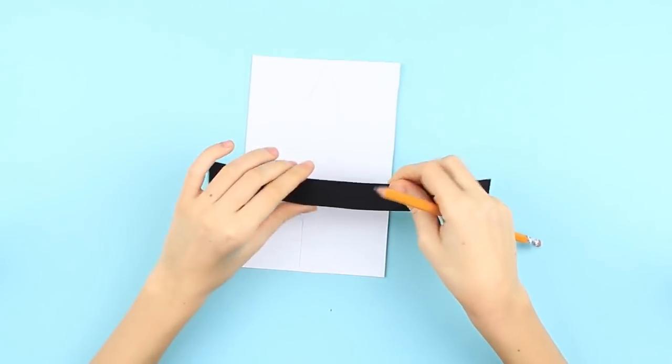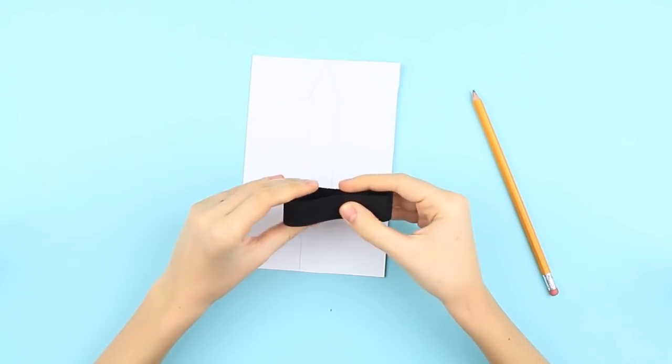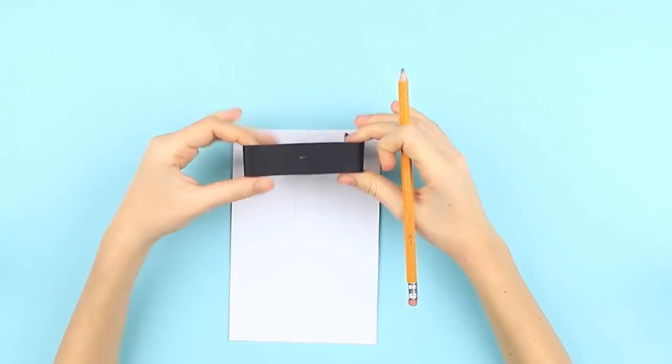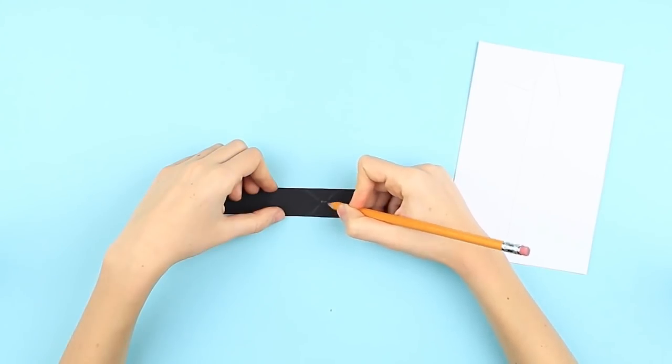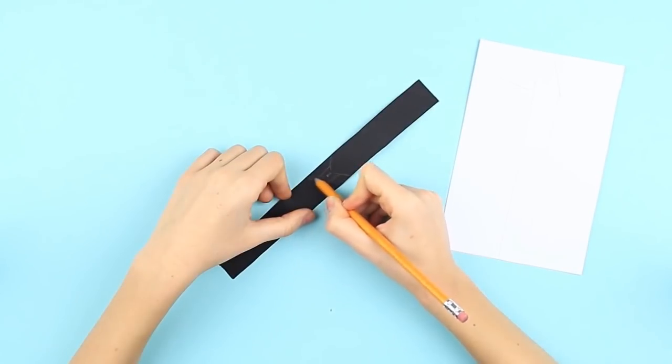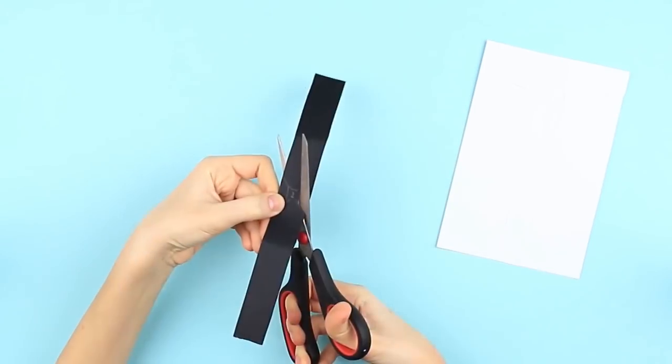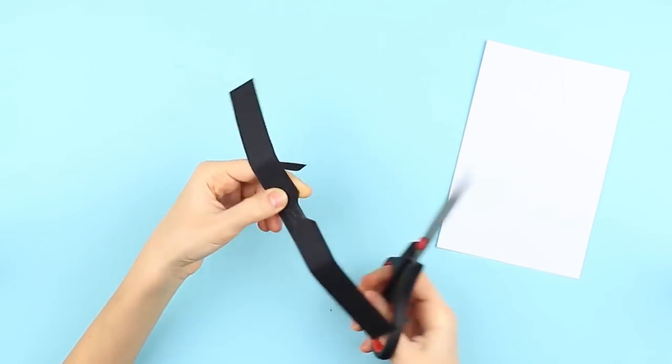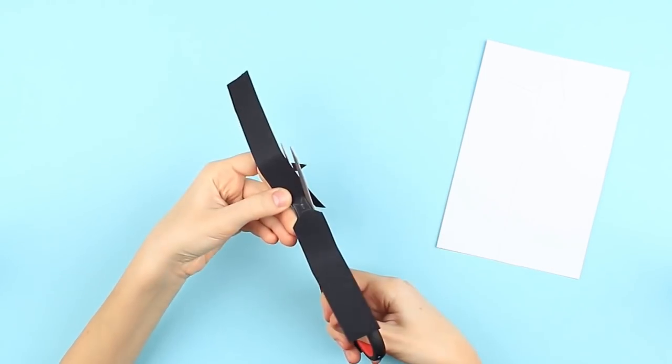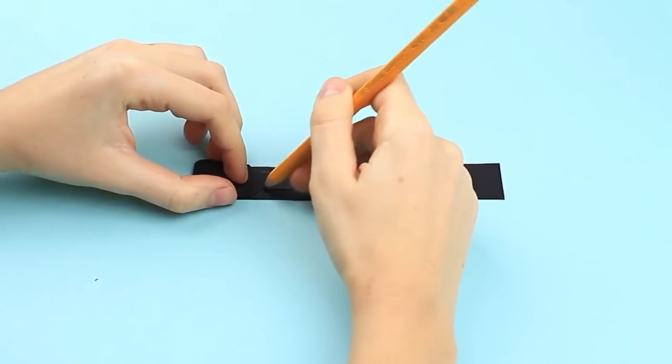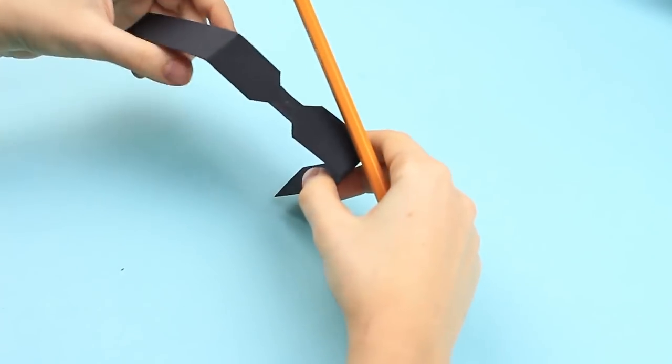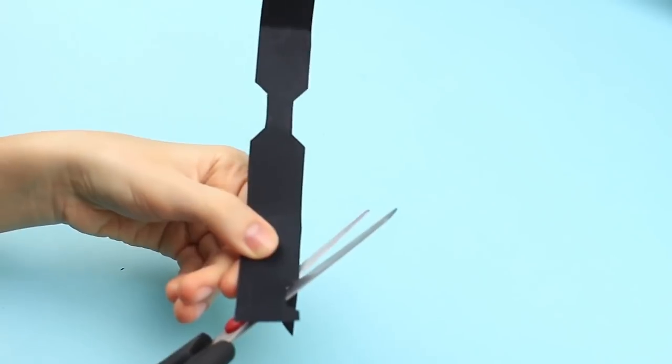Take a strip of black paper. Shape a ring and press over. Make a bow tie. Cut off the excess. Repeat the shape. Cut it out.